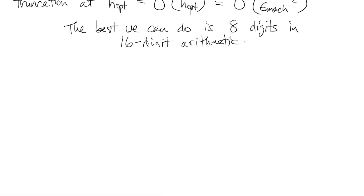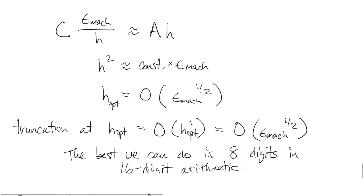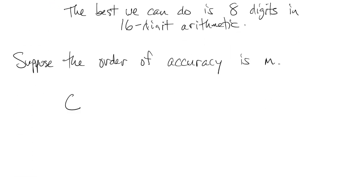And finally, let's suppose that the order of accuracy is just some arbitrary number m. The same argument works up to the point where we have this balance between roundoff and truncation. Now the truncation error is proportional to h to the mth power.